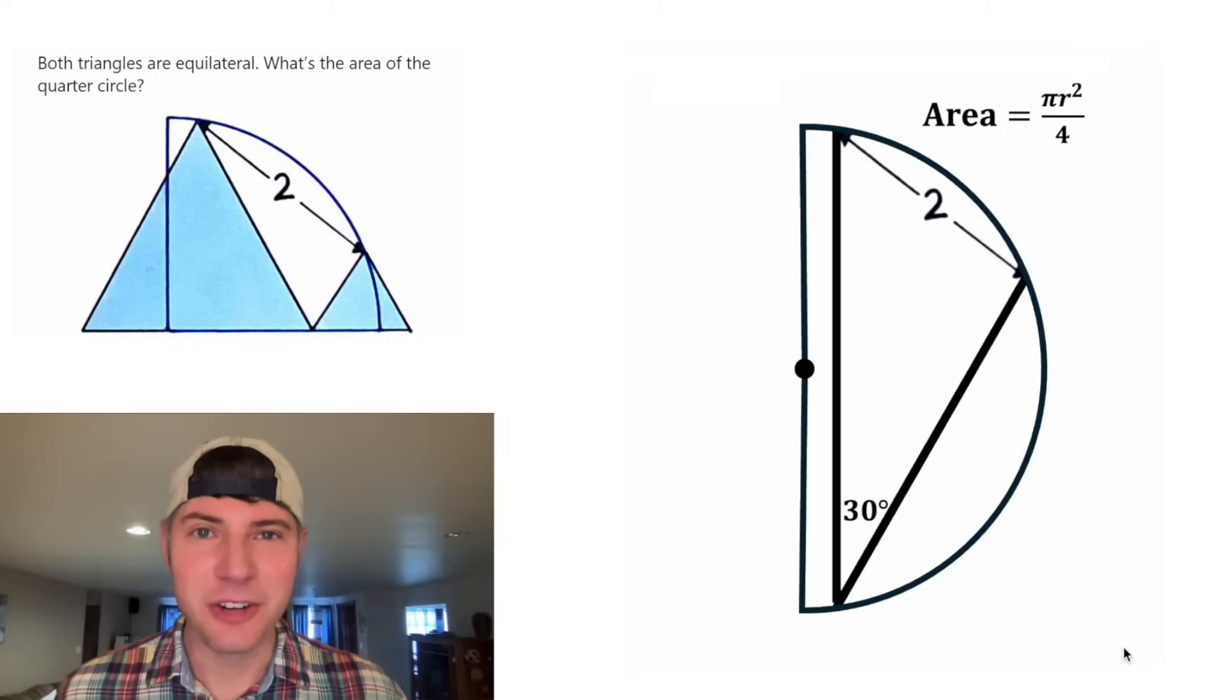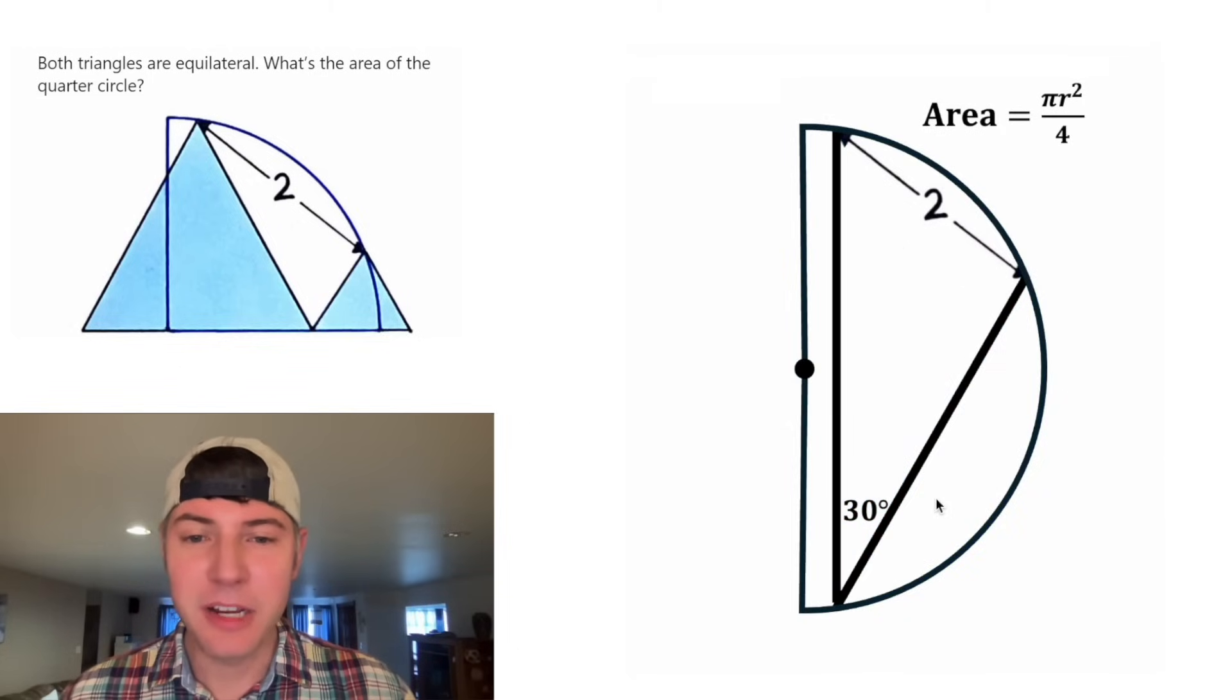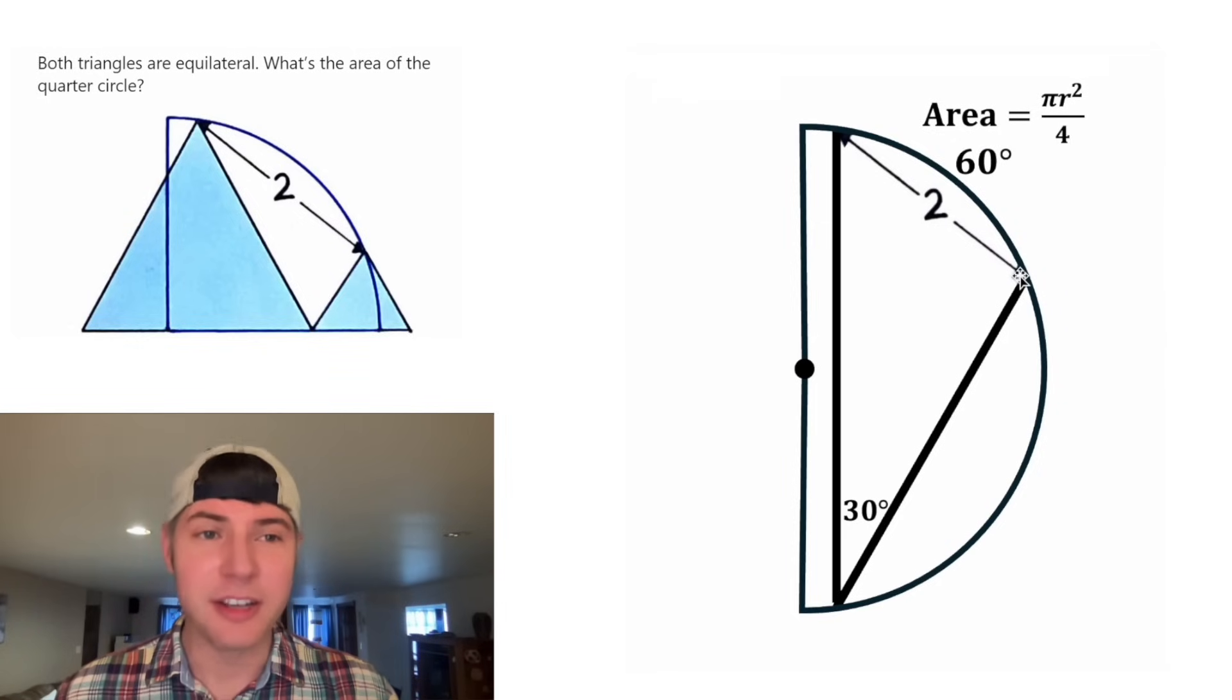And now let's focus on this 30 degree angle. Since the vertex is on the circle, this is called an inscribed angle. And inscribed angles are always half the inscribed arc. So the measure of this arc right here is 60 degrees.